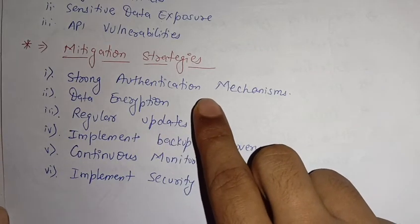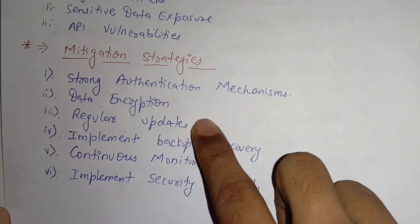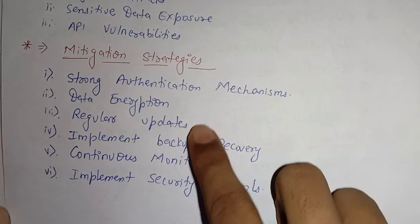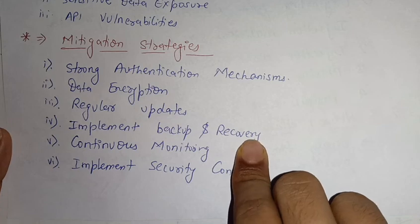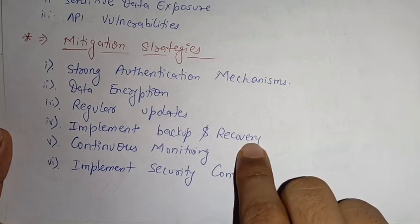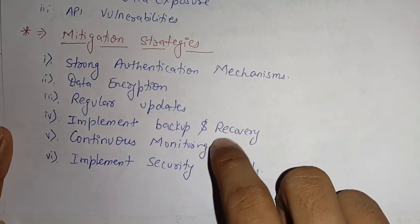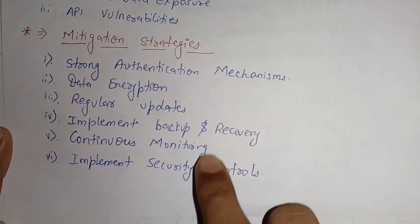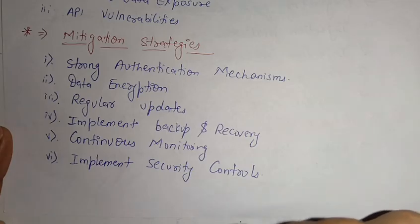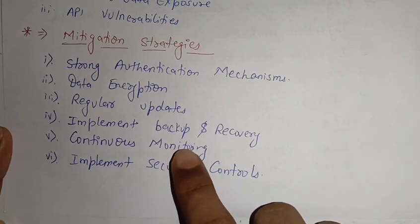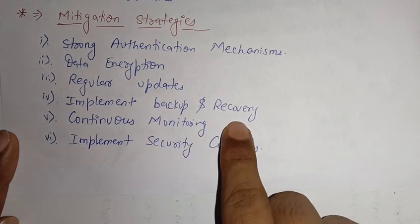The third strategy is regular updates — whatever updates come to the software should be applied at certain intervals and as soon as possible, making regular updates an important strategy for database security. The fourth is implementing backup and recovery — if data is lost, having backup and recovery means that data and information can be restored again. The fifth is continuous monitoring — if data is being stolen or something suspicious is happening, they can monitor and recover data easily with continuous monitoring.